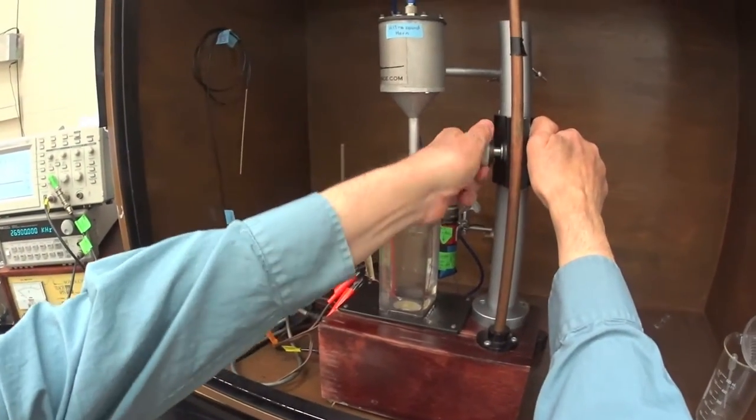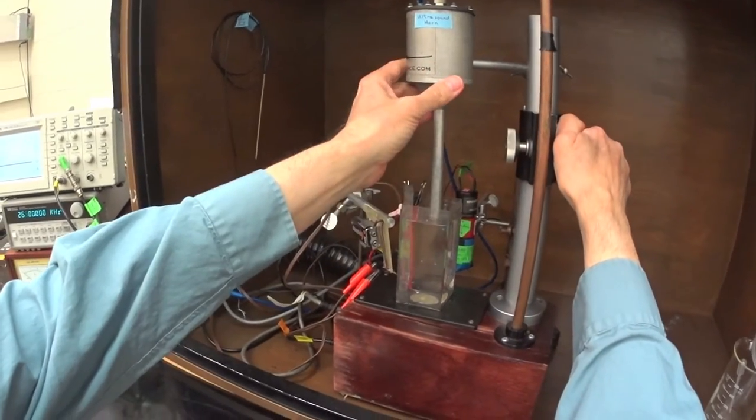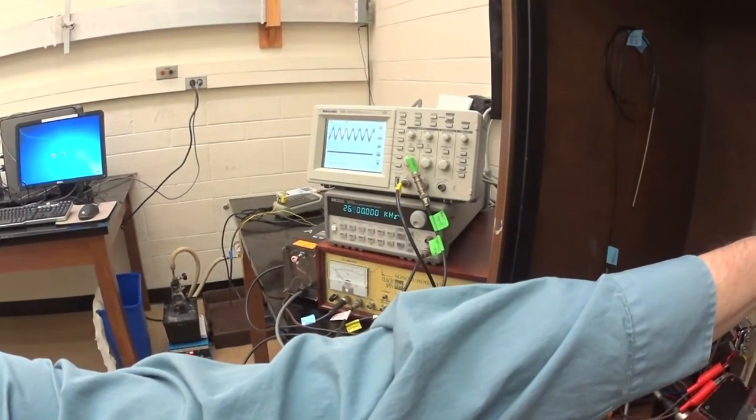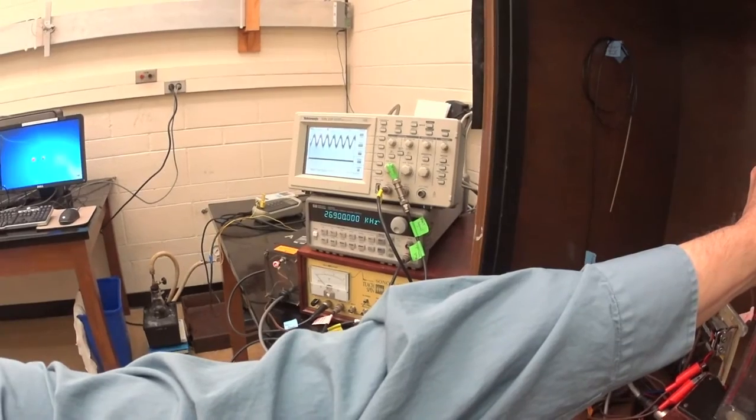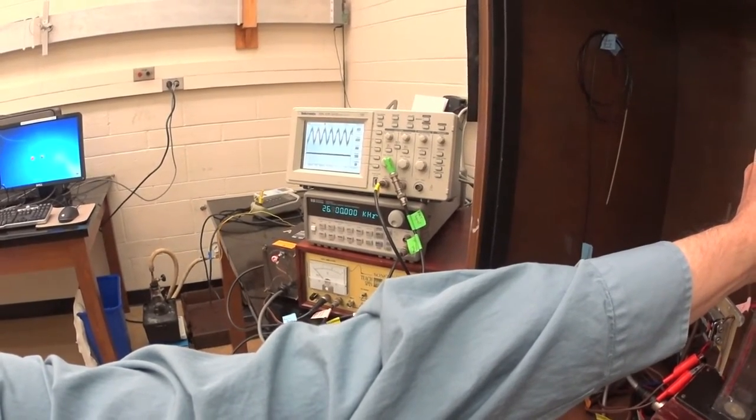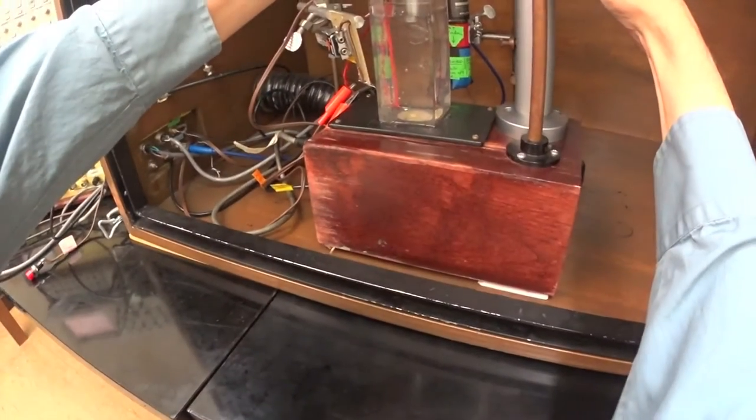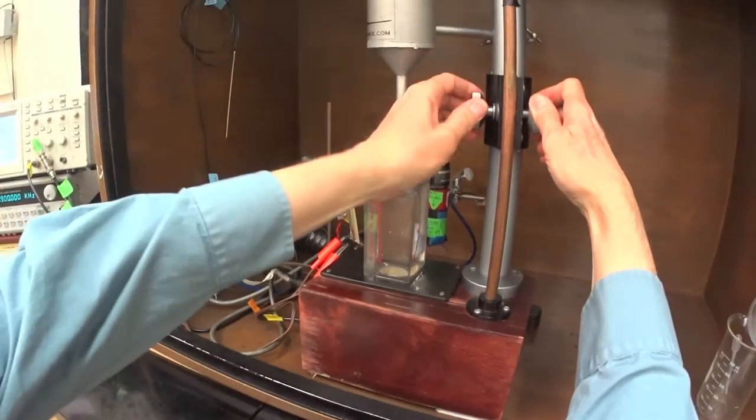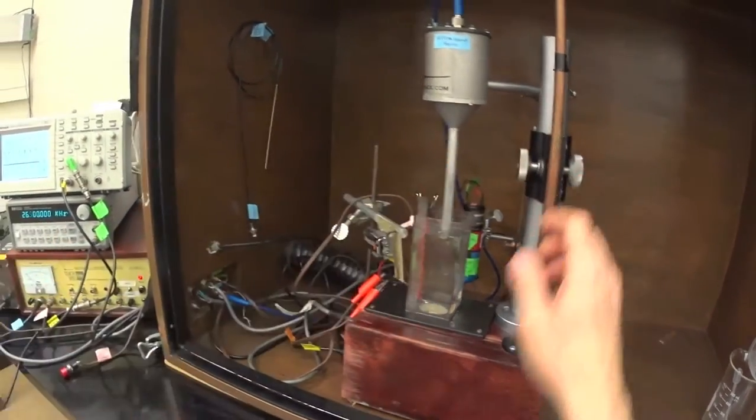Use the support stand knobs to adjust the depth of the ultrasound horn tip until the maximum amplitude is observed. Note that the knob on the left releases the horn, and the one on the right moves it up and down. But sometimes moving the one on the right also releases the horn, so be careful that the horn doesn't come crashing down under its own weight. You may need to re-tighten the left knob as you adjust the right.